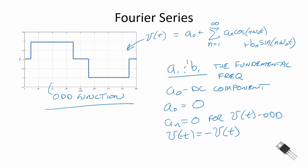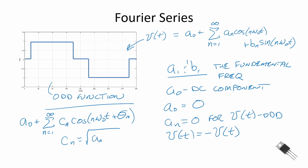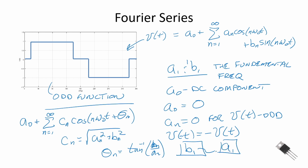Another form of the Fourier series is a_0 plus a summation from n equal 1 to infinity of c_n cosine(n·ω₀·t + θ_n), where c_n equals the square root of (a_n squared plus b_n squared) and θ_n equals the inverse tangent of b_n divided by a_n. The Fourier series coefficients tell us the harmonic content of the periodic waveform. For a pure sine wave, all coefficients except b_1 are zero; for a pure cosine wave, only a_1 is nonzero.